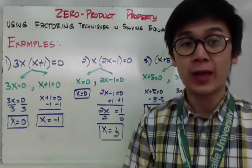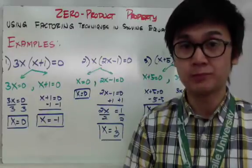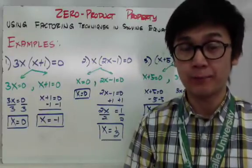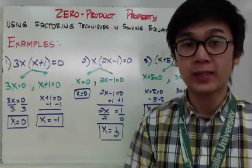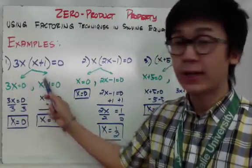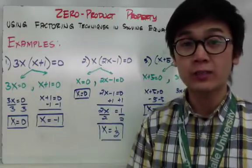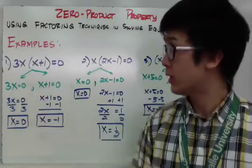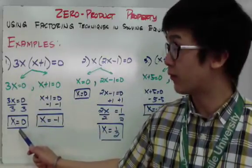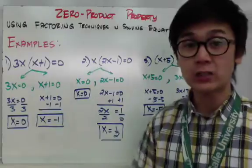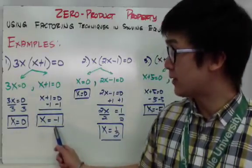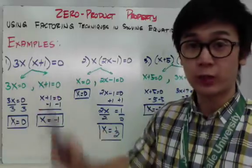My first example: I have 3x times x plus 1 equal to 0. I already have two factors, 3x and x plus 1. Using the Zero Product Property (ZPP), I can separate my equation into 3x equal to 0 and x plus 1 equal to 0 to solve for x. My first factor gives me x equals 0, and my second factor gives me x equals negative 1. These are my values of x for this equation.